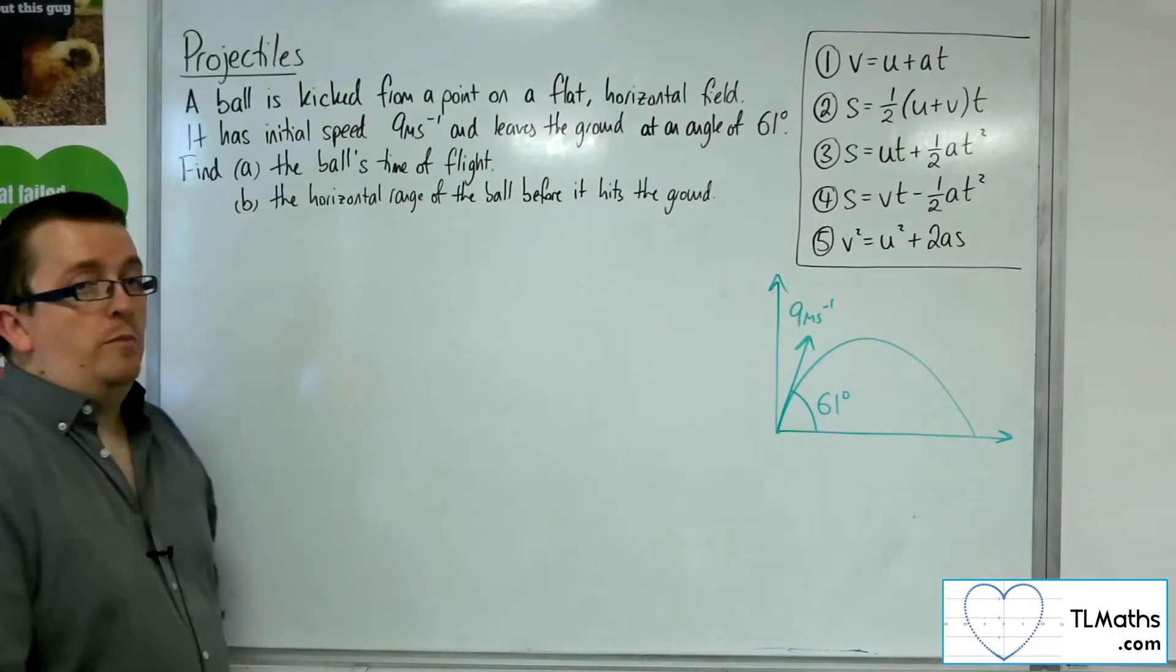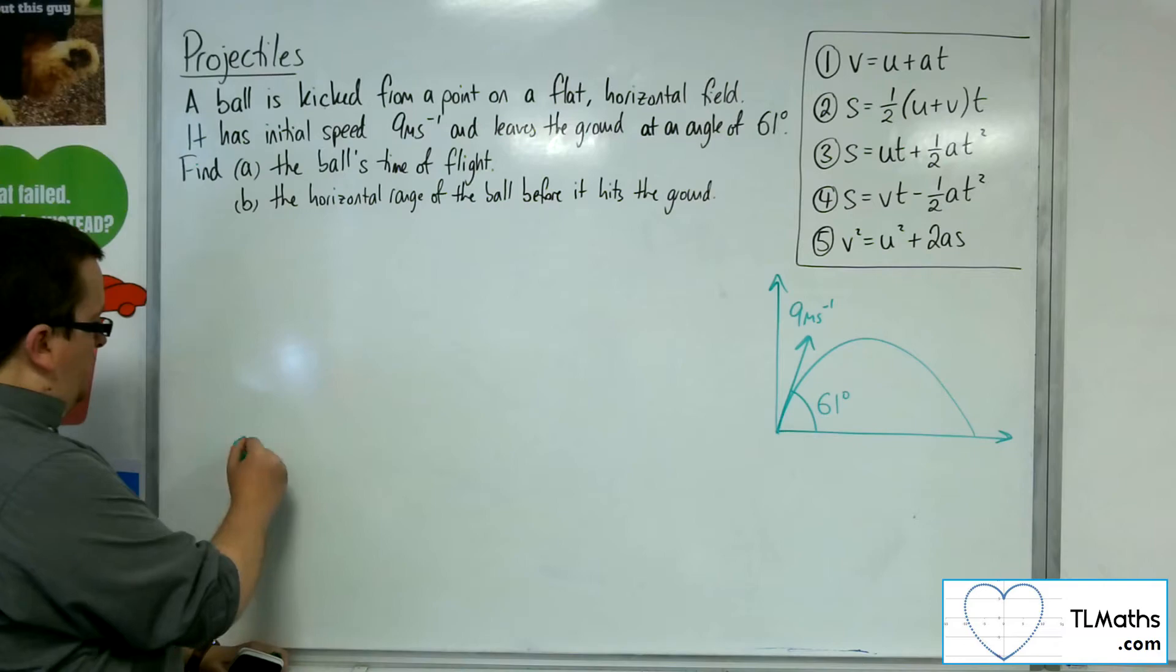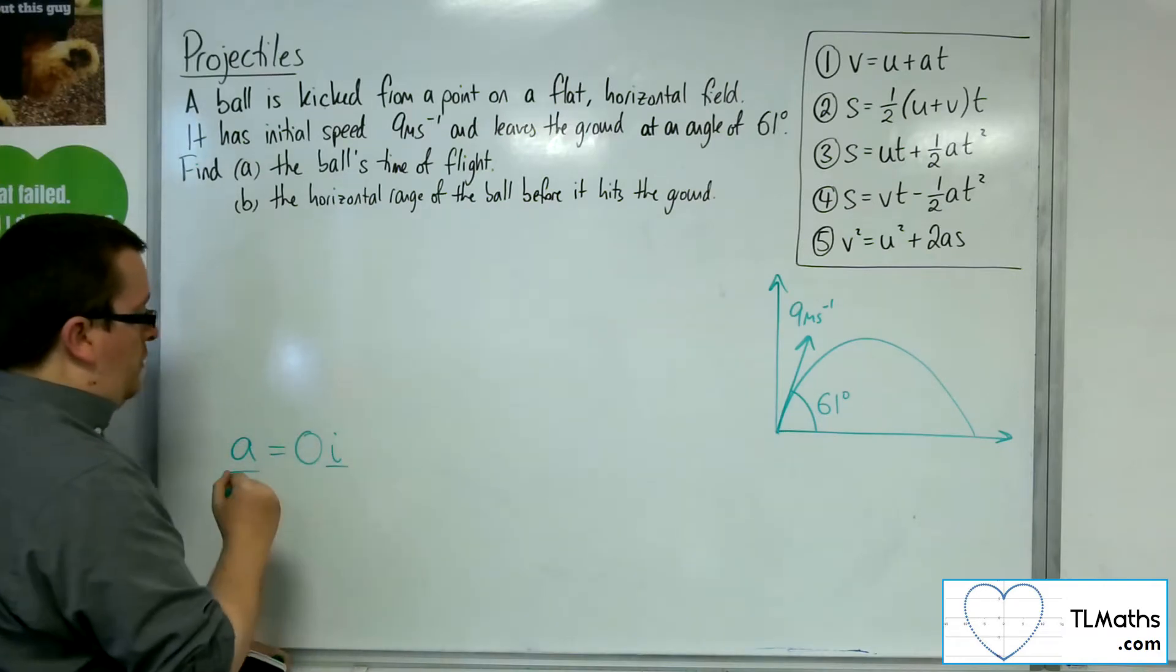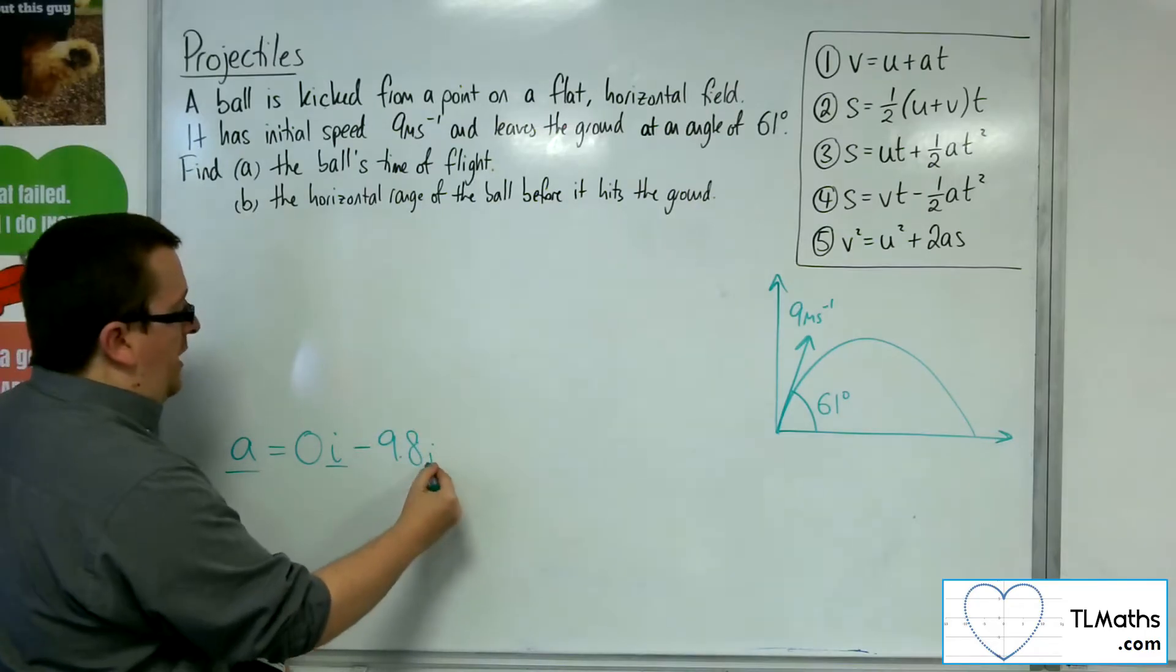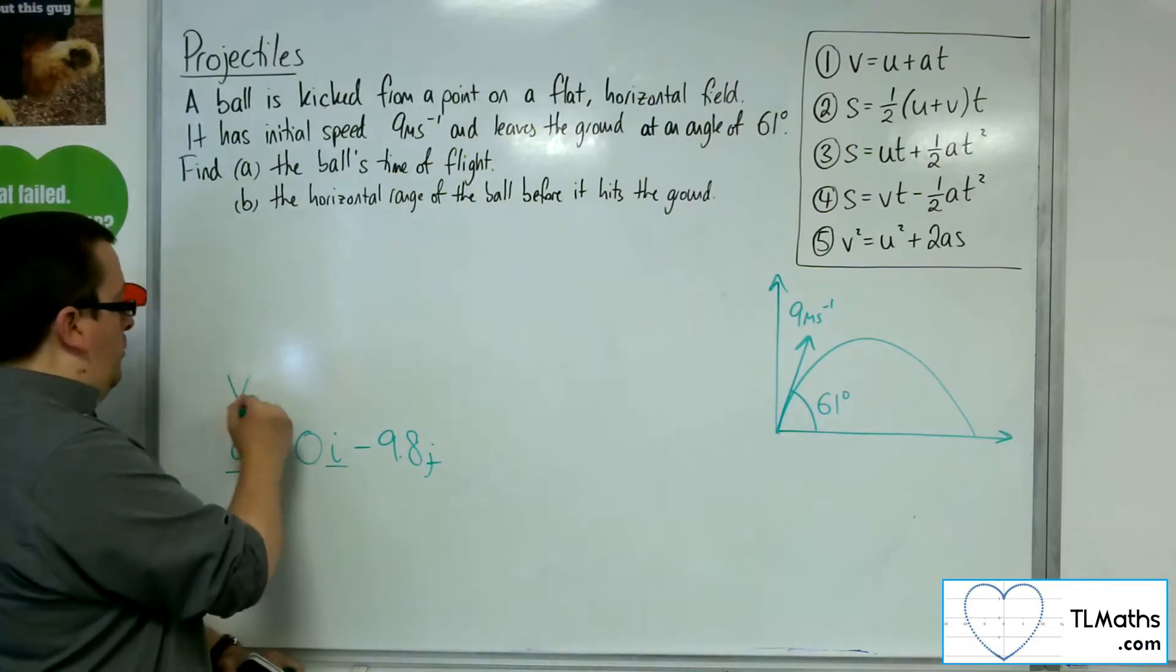We want to find the ball's time of flight. So we're going to start off with the acceleration equation, which is the same every time. We've got 0i because there's no acceleration horizontally, and minus 9.8j because the only acceleration vertically is due to gravity. We integrate upwards.